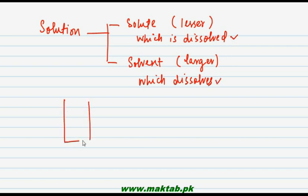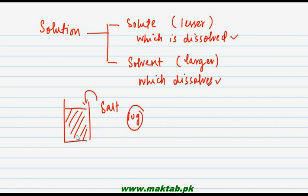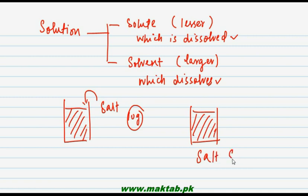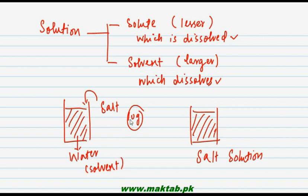For example, if we have water in a container and we add some salt — say 10 grams of salt — the salt will dissolve in the water, and the thing we get will be a solution of salt. In this salt solution, there are two things: water, which dissolved the salt, is the solvent (larger quantity), and salt, which is dissolved in lesser quantity, is the solute.